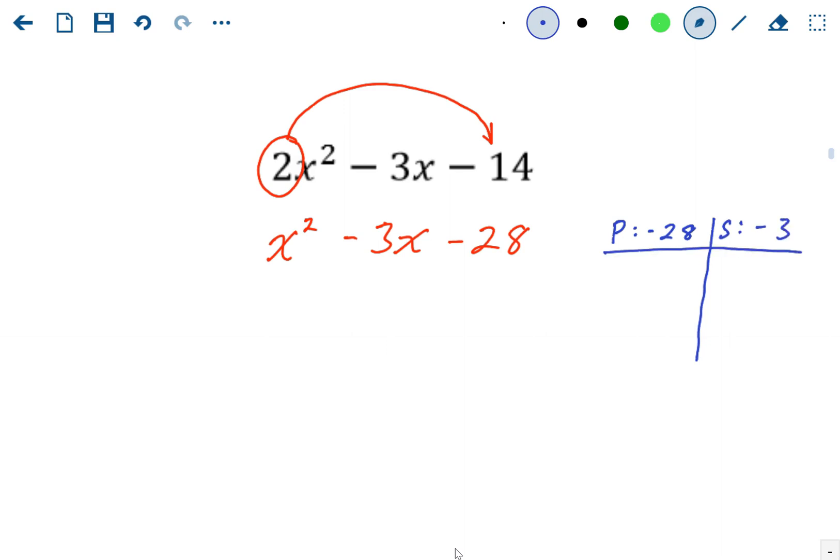Well, the only way you can multiply to a negative and add to a negative is if the bigger factor is negative. So the factors of 28, negative 28, are going to be 1 and negative 28. 2 and negative 14. And 4 and negative 7.